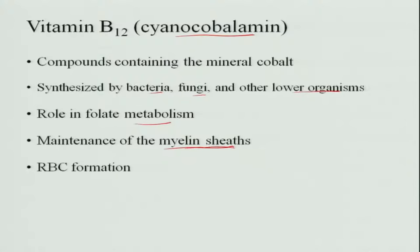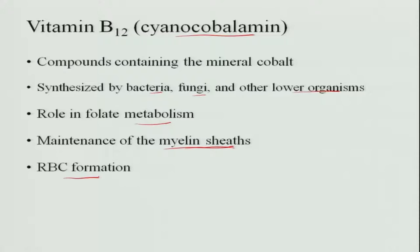The myelin sheath is present on the nerves. Vitamin B12 is also very important for RBC formation because it is required for the maturation of RBCs. Deficiency of vitamin B12 stops maturation at the megaloblast stage, causing the cells to become larger. Therefore, the circulating number of cells decreases, causing anemia which is called pernicious anemia.